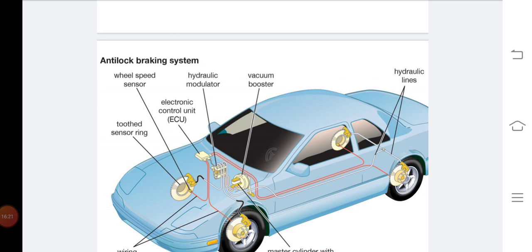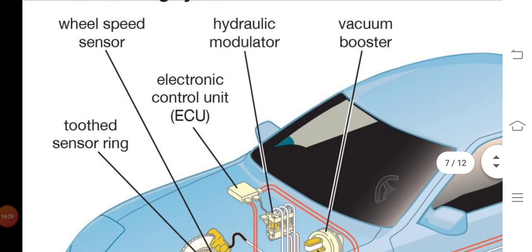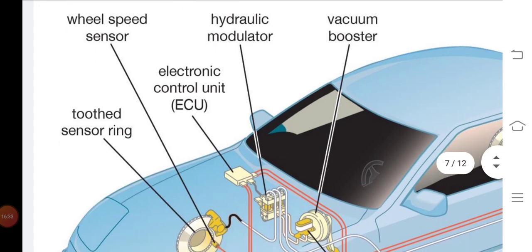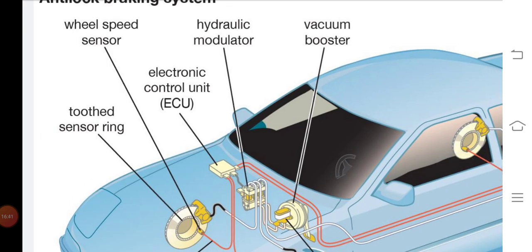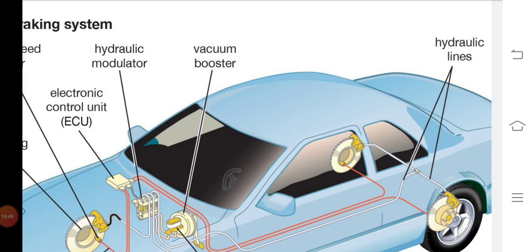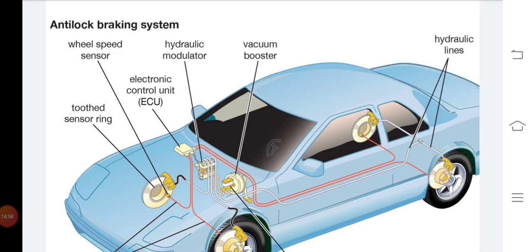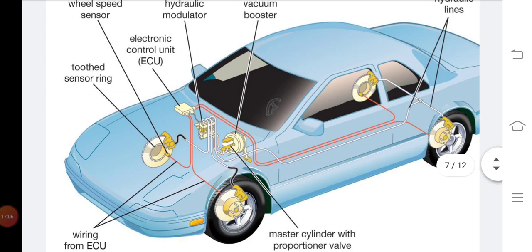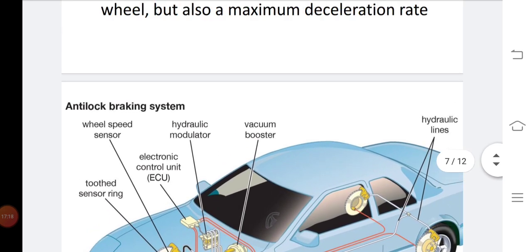The electronic control units or ECUs are shown here, along with the hydraulic modulator and hydraulic lines used in the ABS system for all four wheels. It uses wheel speed sensors and tooth sensor rings — other types of sensors — and one master cylinder is always required for the braking system. These are the main components of the Anti-Lock Braking System.